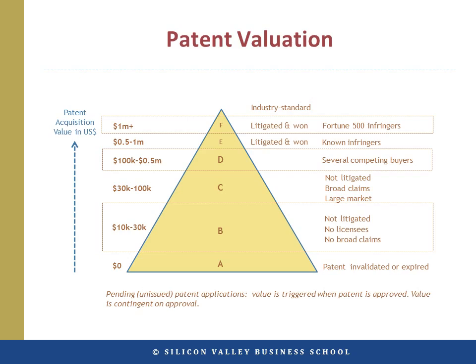Moving up to Group E, some patents are valued at half a million to $1 million each. Generally, the patents that sell for mid to high six figures are those that have been litigated and won, and where there are known infringers. The price is justified by the potential royalty stream from such infringers.